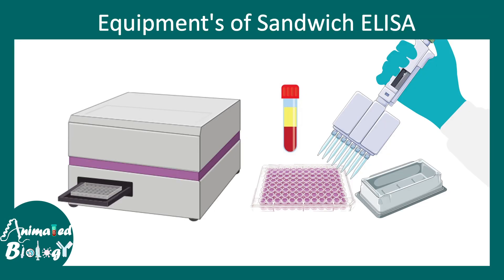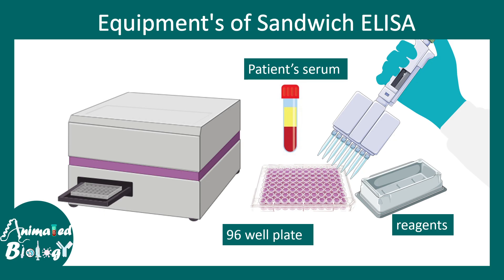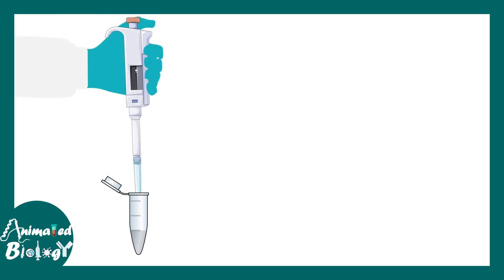One needs a good pair of non-overlapping capture and detection antibodies for a successful sandwich ELISA. The equipment required is basically a plate reader which detects the colorimetric change, a 96-well plate where the ELISA is performed, plus pipettes and samples. It is not very complicated — it can be done on a day-to-day basis in a lab with just a benchtop instrument.